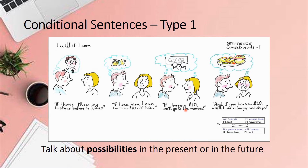So we use conditional sentence type 1 here. For the last example: if you borrow 20 pounds, we will have a burger and chips. Buying a burger and chips is a possible result of borrowing 20 pounds, so we use type 1 conditional sentence. From all of these examples, we use the first conditional when we talk about future or present situations we believe are possible or likely to happen.